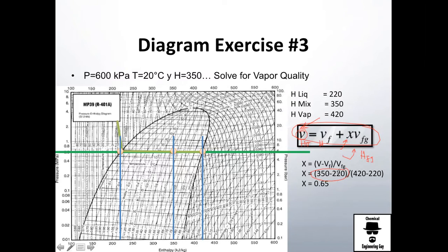So let's do it. X value is, total value will be 350 minus 220 of the liquid, divided by that difference, and I get 0.65.